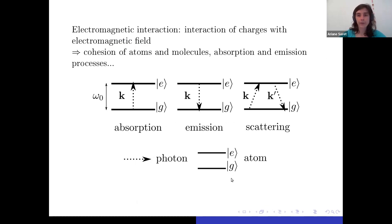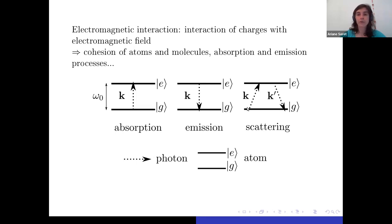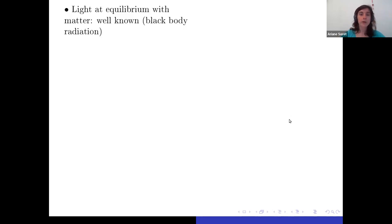you have three basic processes. First, a photon can be absorbed by the atom, causing the atom to go from the ground state to the excited state. Or a photon of wave number k can be emitted by an atom. And then you have scattering processes in which an incident photon of wave number k is absorbed and re-emitted with another wave number k prime.